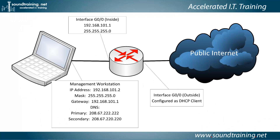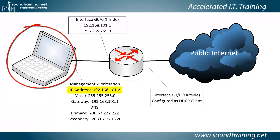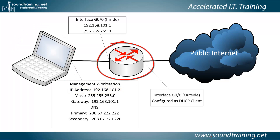Here's a look at the diagram we're working from. It's pretty simple. We have a management workstation configured with an IP address of 192.168.101.2. A router with a statically configured inside interface on Gigabit Ethernet 0/0 at 192.168.101.1, and an outside interface configured as a DHCP client — a fairly common configuration, especially in small offices. It would also work with a statically configured address on the outside interface.